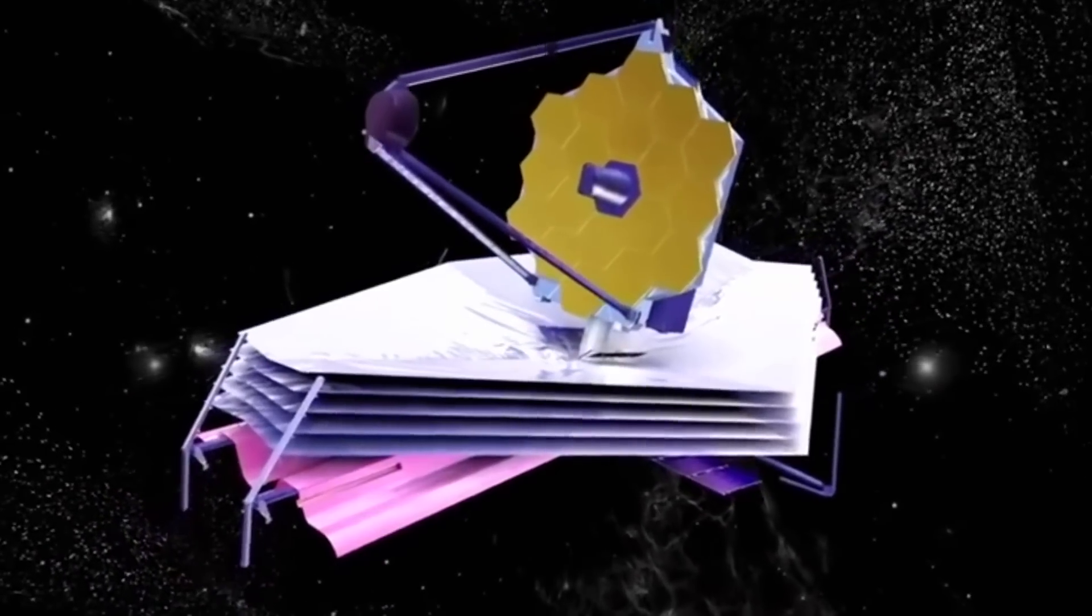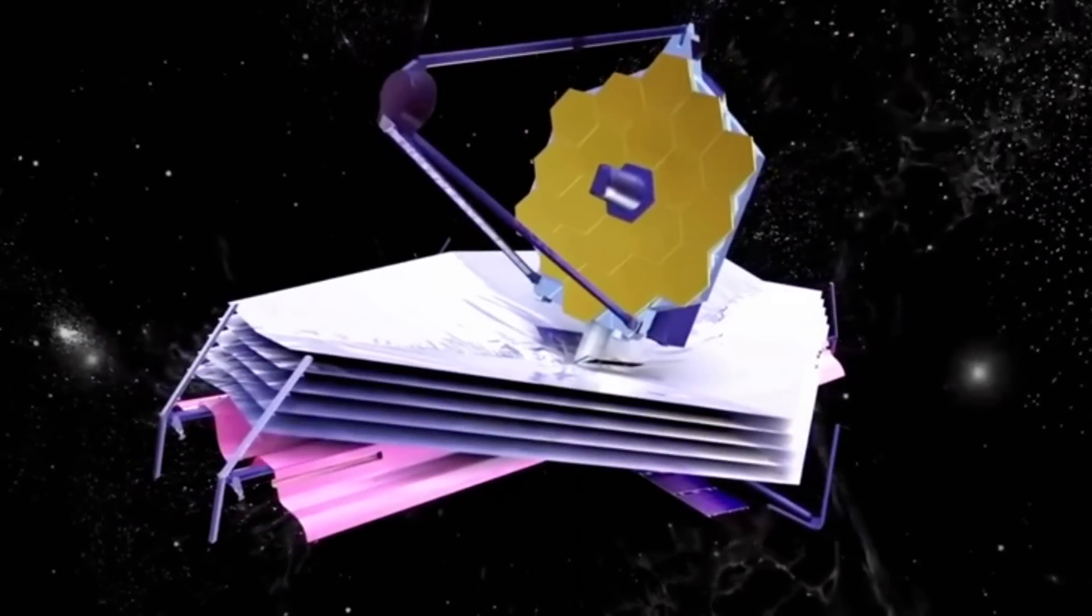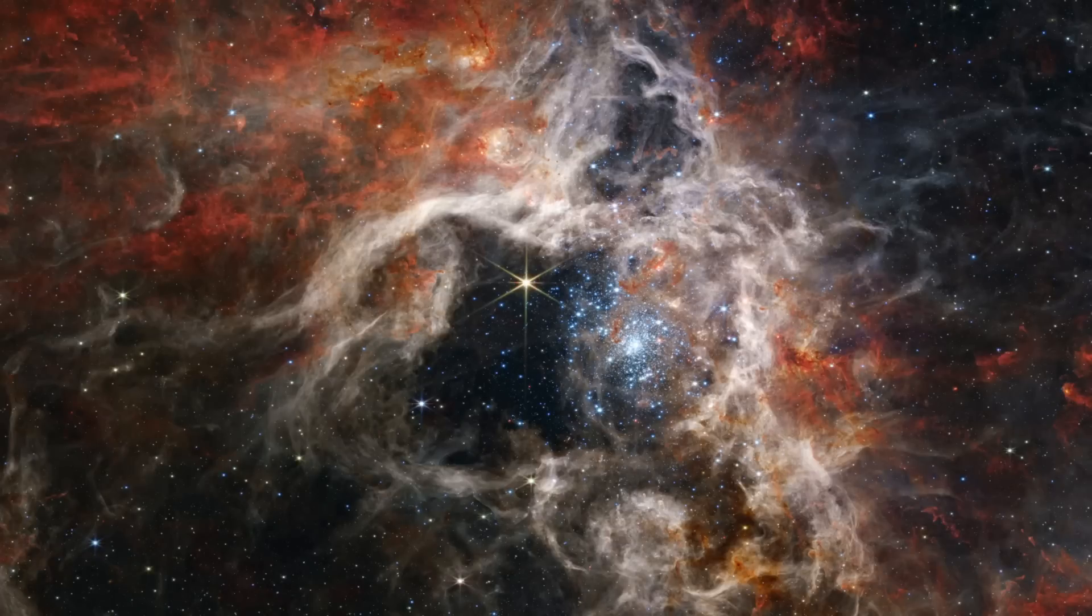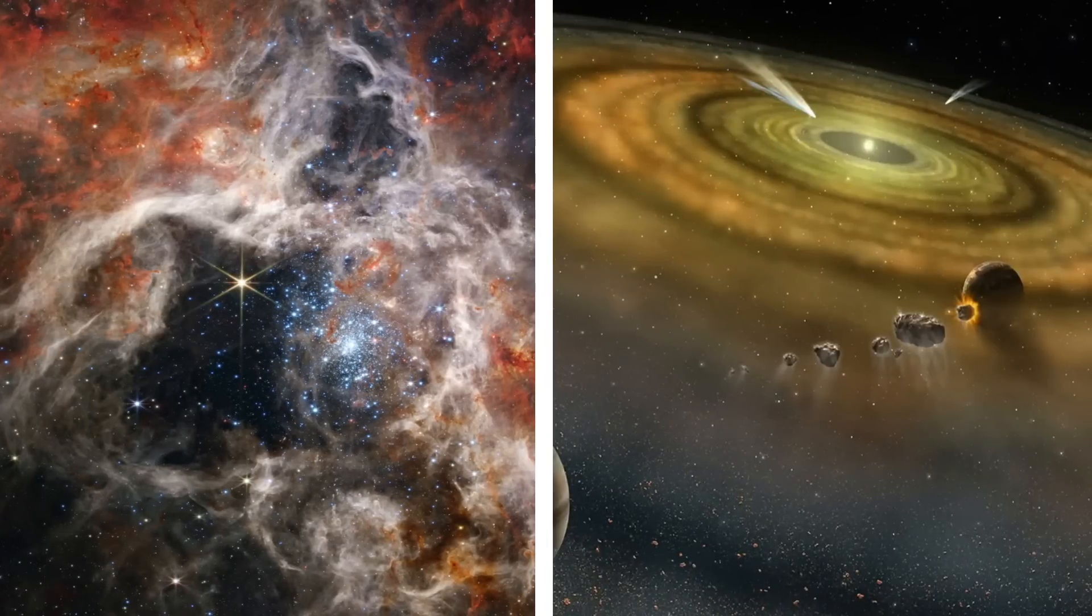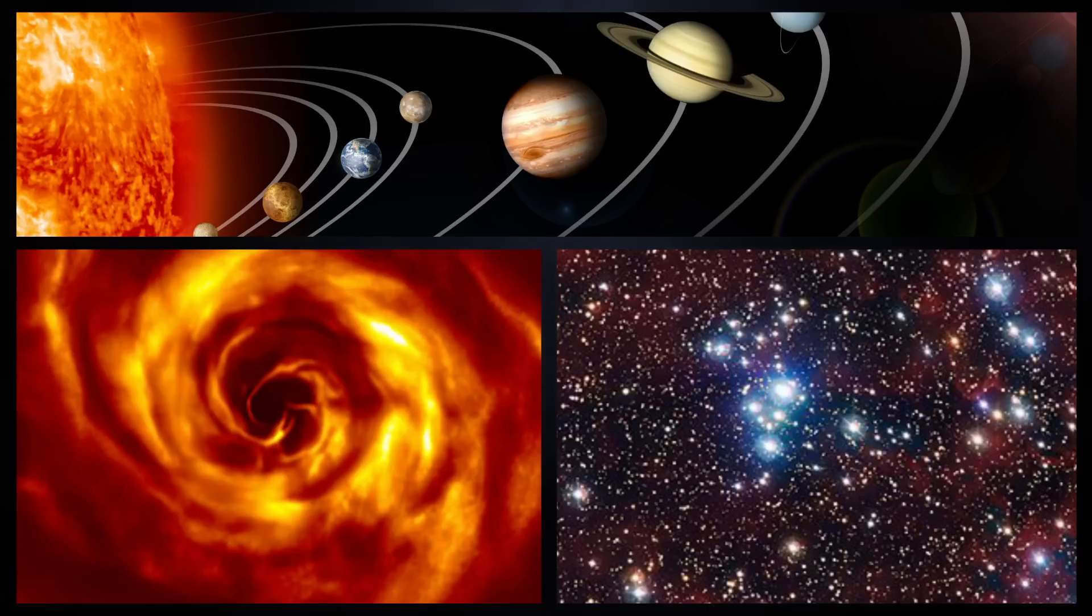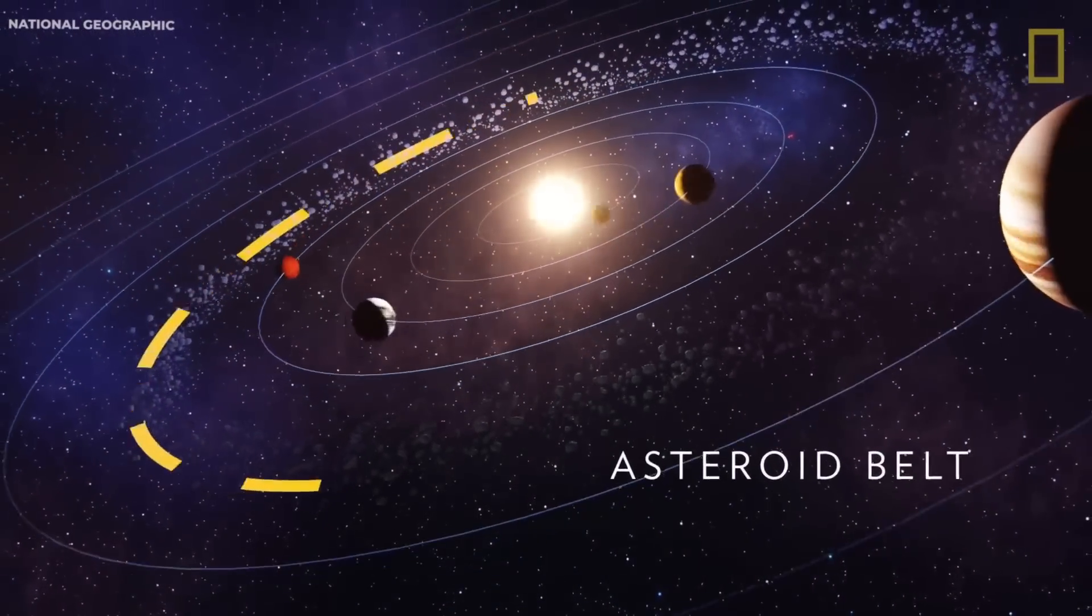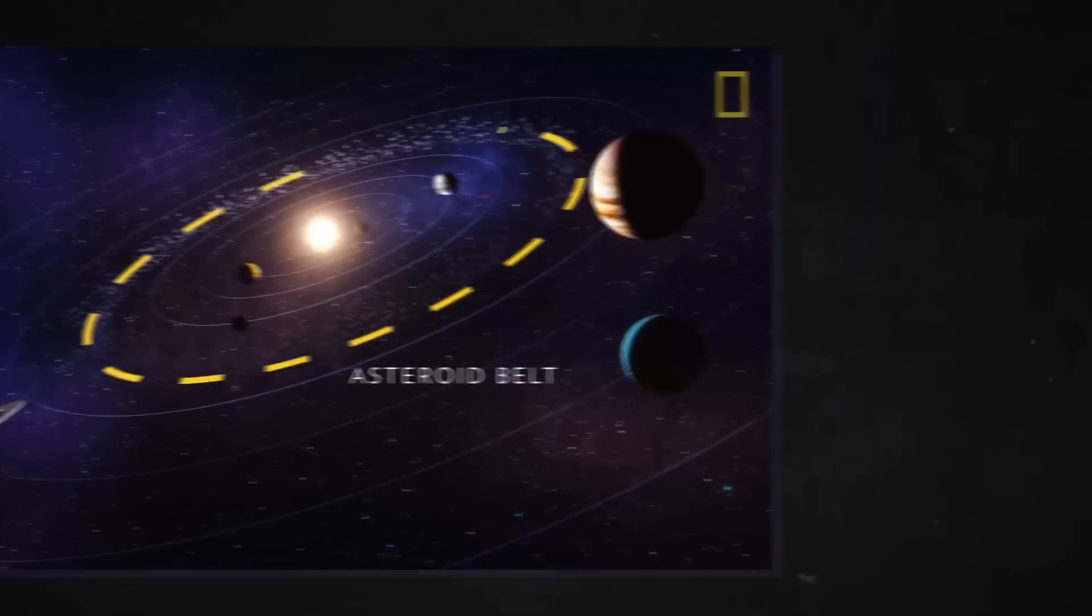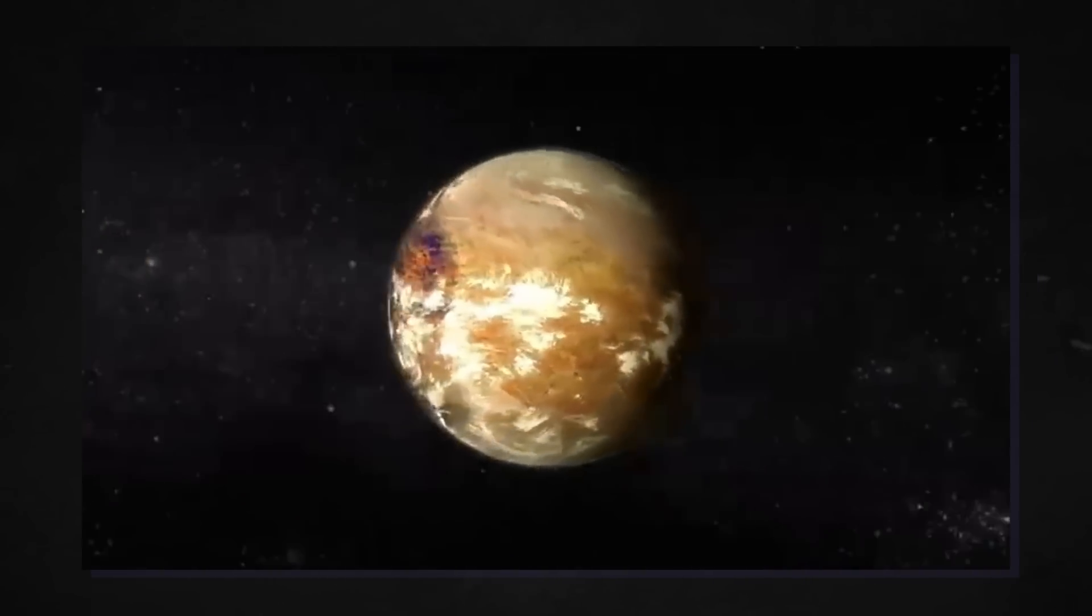The James Webb Telescope contributes to our understanding of the origin and evolution of planetary systems. Since it allows researchers to go in-depth because of their detail, like the ability to study protoplanetary disks, the swirling clouds of dust and gases amongst young stars, they can investigate the process involved in forming planets. These observations provide all the necessary insights into the processes that shape planetary systems and the conditions that are necessary for the emergence of life-supporting worlds.